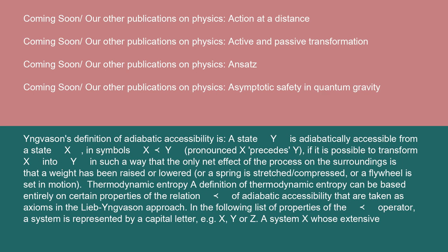Lieb and Yngvason's definition of adiabatic accessibility is: a state Y is adiabatically accessible from a state X, in symbols X precedes Y, if it is possible to transform X into Y in such a way that the only net effect of the process on the surroundings is that a weight has been raised or lowered, or a spring is stretched or compressed, or a flywheel is set in motion.